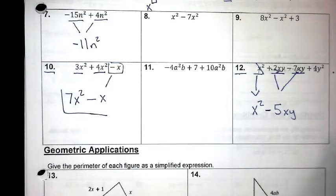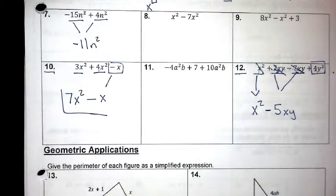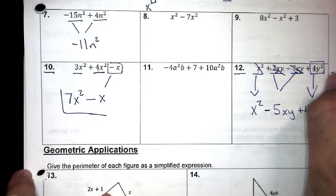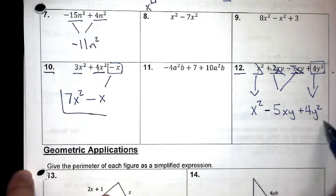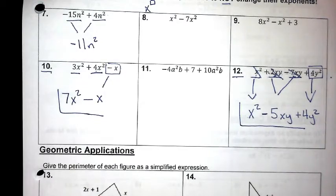Am I done with the xy? Yes, because there are no other xy's to combine. What's left in my problem? Four y squared. Is there anything to combine with that 4y squared? No, so I bring it down — positive 4y squared. Looking at what I rewrote, is there anything else to combine? No.